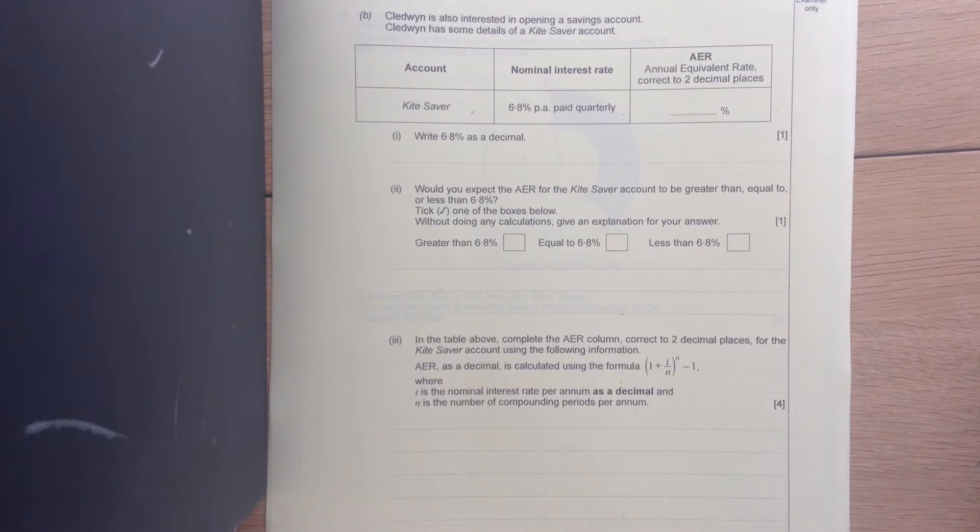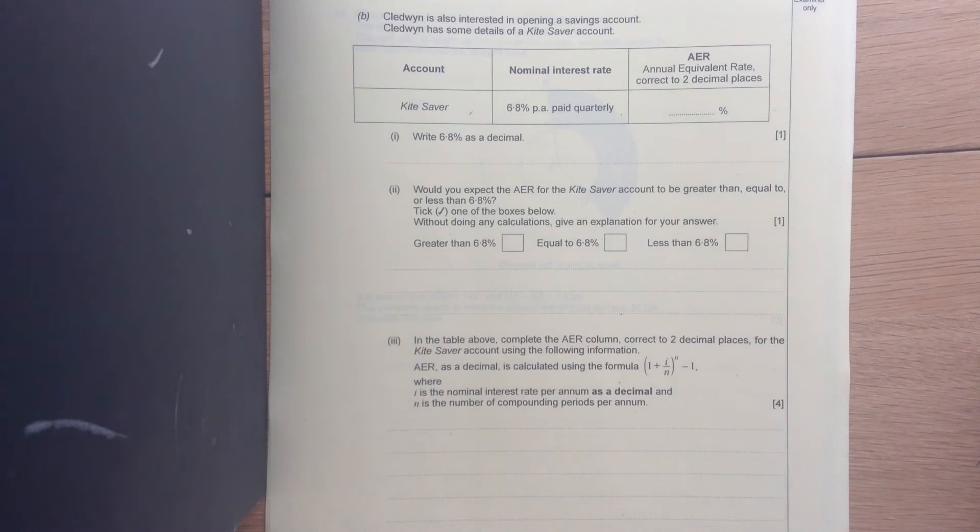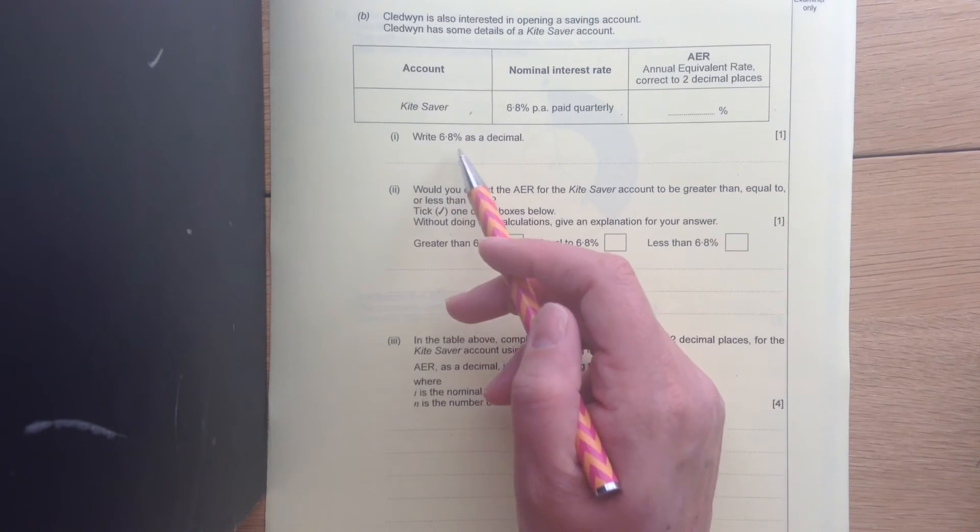Part B. Quedwin is also interested in opening a saving account. Quedwin has some details for a kite saving account. And there we have a nominal interest rate of 6.8% per annum paid quarterly. So this interest is paid on to your savings each quarter this time. First part says, write 6.8 as a decimal.